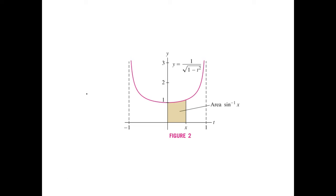If you flip the limits and make x negative, then you do get a negative area. This works for x anywhere from minus 1 to 1, but not at minus 1 or 1. Why do you need this? I'm not sure — they like to show it.